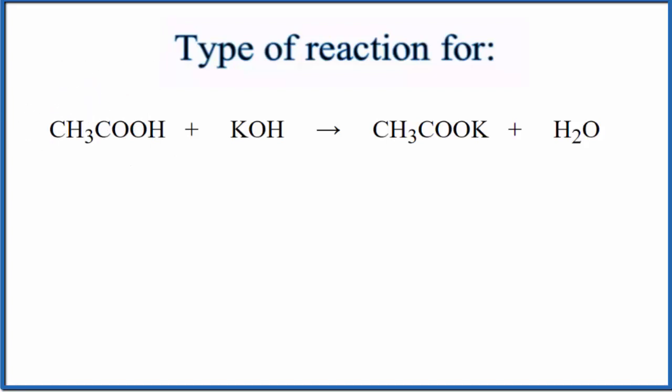So we have our acetic acid plus our potassium hydroxide. When I try to figure out the type of reaction, first thing I notice is I have water here, and then I have a salt. I have the acetate ion and this metal, this potassium.